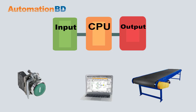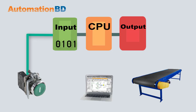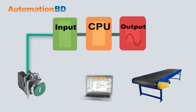When the push button is pressed, the PLC input receives an electrical raw signal, but the CPU cannot process electrical raw signals directly. So the input module converts the electrical raw signal to process data. The CPU then processes this data, and through the output module — which converts process data back to an electrical raw signal — the conveyor belt runs.